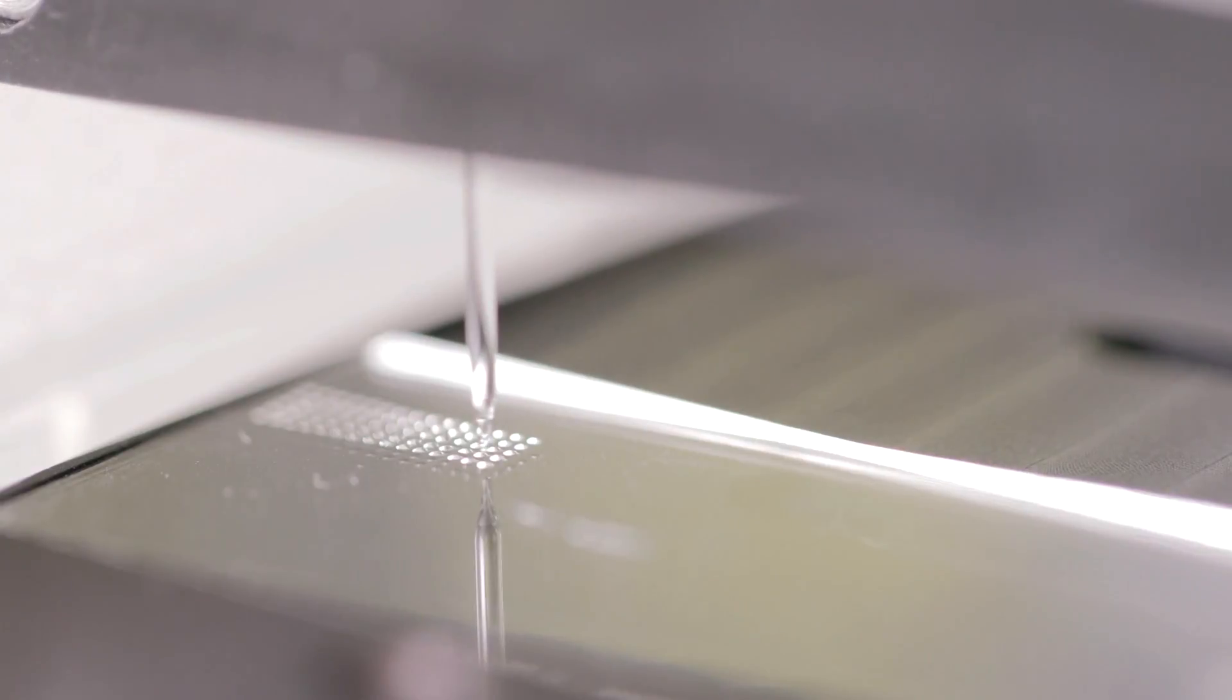A printer puts tiny drops of DNA onto plastic. The DNA lights up under ultraviolet light when it touches E. coli bacteria.